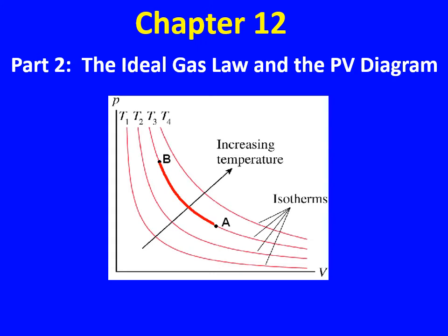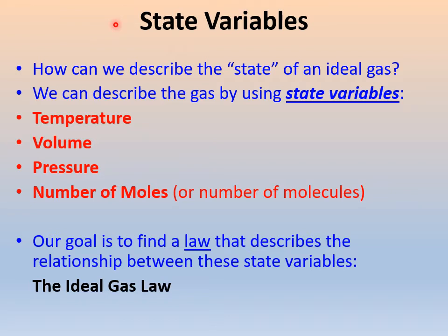Hello, welcome to Chapter 12, Part 2: The Ideal Gas Law and the PV Diagram. We're going to start by talking about something called state variables. How can we describe the state of an ideal gas? We can describe the gas using state variables such as temperature, volume, pressure, and the number of moles or total number of molecules. This list of state variables tells us pretty much everything we need to know about the gas. Our goal is to come up with a law describing the relationship between these state variables, called the ideal gas law.